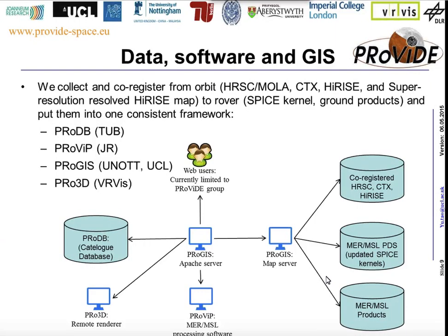We bring both this co-registered dataset — including HRC and HiRISE, rover positions, rover-derived products, panoramas, and stereo reconstruction products — into this ProVide interface. We also have a colleague from TU Berlin developing a catalog database for the rover missions, and colleagues from Austria providing visualization and fast access to large 3D datasets, accessible via a WebGIS interface.